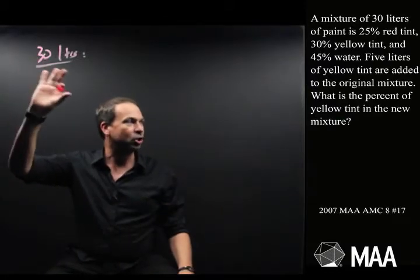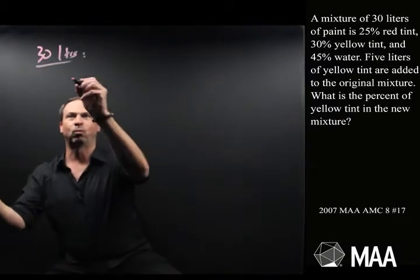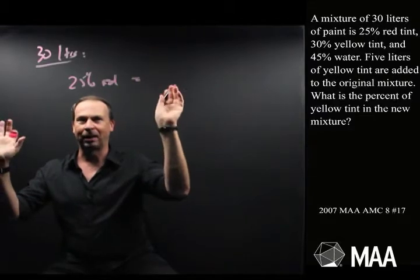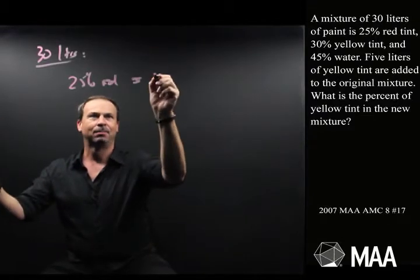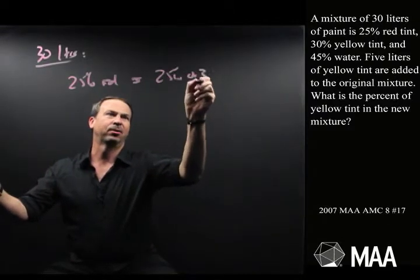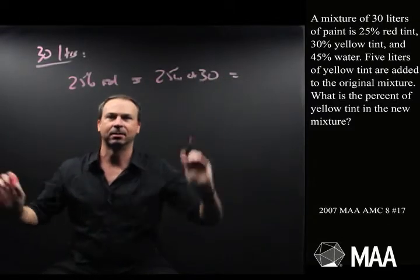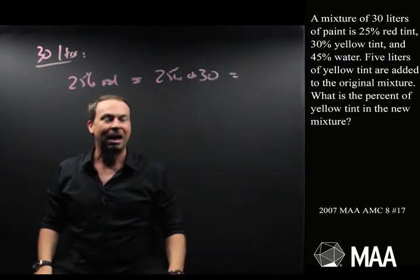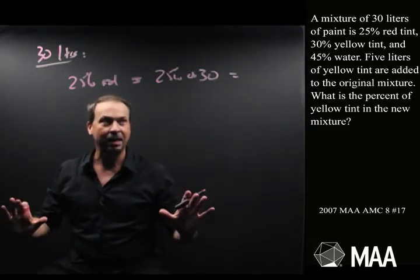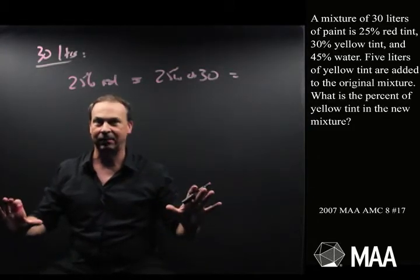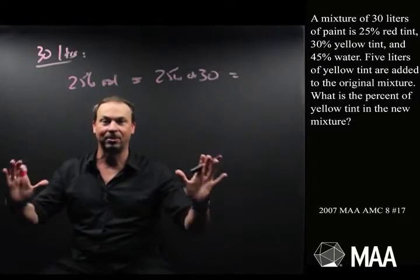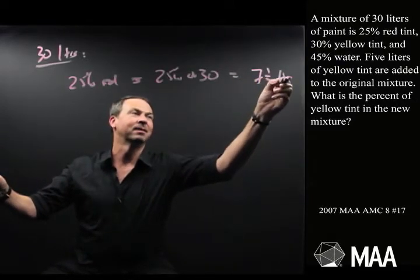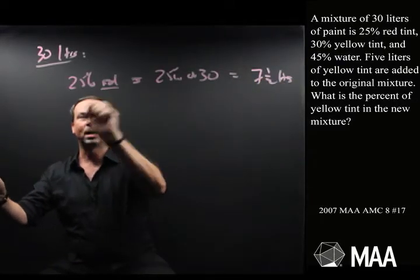30 litres of paint, 25% is red. So 25% of 30 litres — that's a quarter of 30. Half of 30 is 15, half of that is 7 and a half. So a quarter of 30 is 7 and a half. So 7 and a half litres is red.